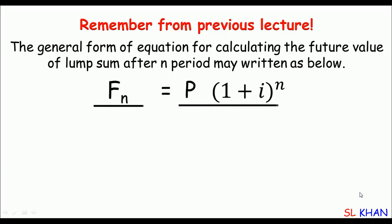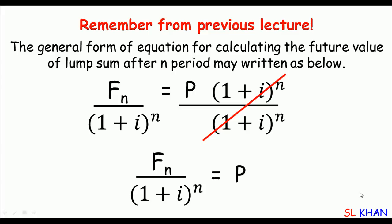If you divide both sides by (1 + i)^n, we can get the present value equals F divided by (1 + i)^n. That's it, so now we can use this formula to determine the present value of money.